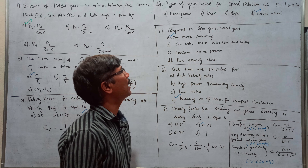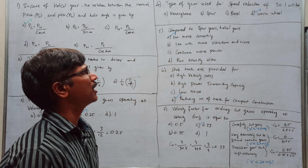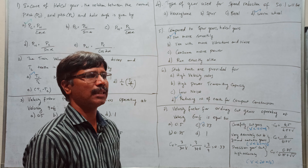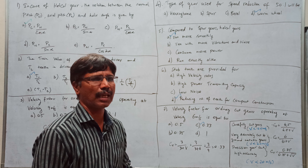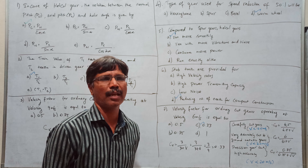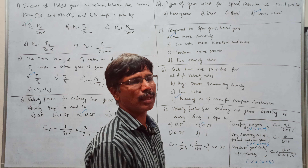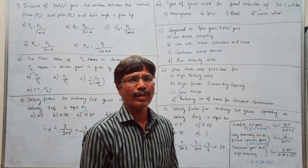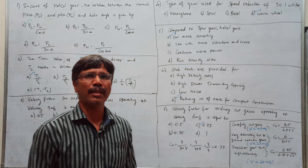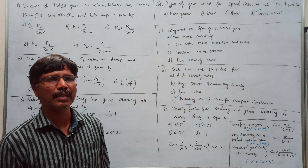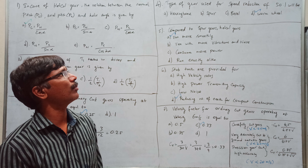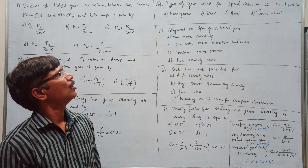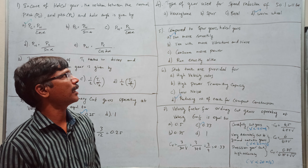Type of gear: speed reduction 5 to 1. Velocity factor — what is the gear? Worm and worm wheel. So worm wheel is the right answer.